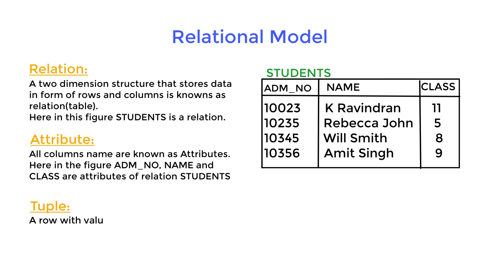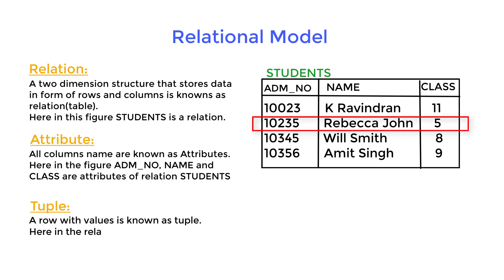Tuple: a row with values is known as a tuple. Here in this relation there are four tuples.